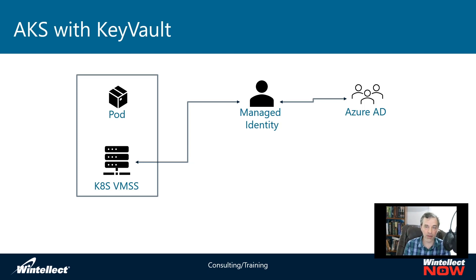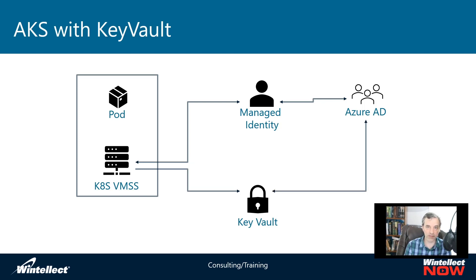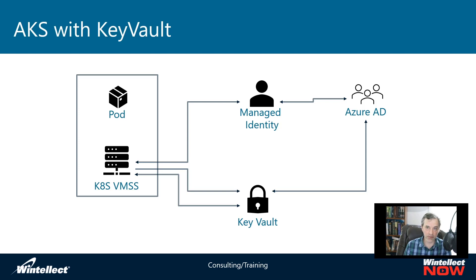The next thing that happens is the VM scale set will then go to Key Vault and present a token to that Key Vault. The Key Vault will then be associated with Azure Active Directory and will go out and validate that token against Azure Active Directory. It'll look at the token and get a response back from Azure Active Directory to validate — is this person who they say they are by way of that token? And once that validation has happened, then the Key Vault can then serve up secrets to that VM scale set.